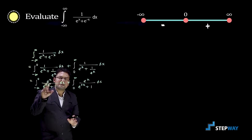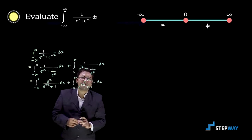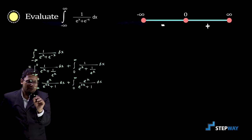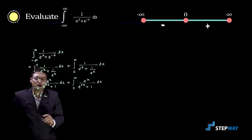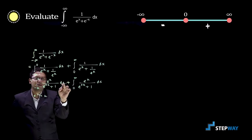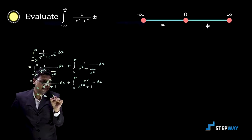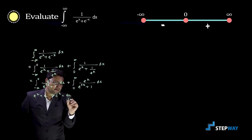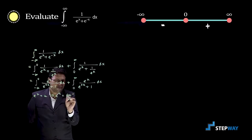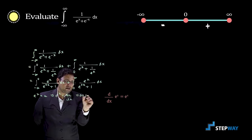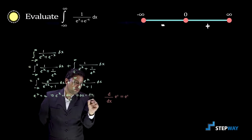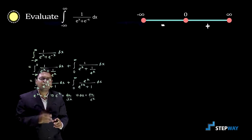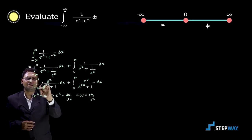To integrate these terms, we substitute e raised to x equal to a new variable u. Consider e raised to x equal to u and differentiate both sides with respect to x. We get e raised to x equal to du upon dx, so dx equals du upon e raised to x. Since we substitute e raised to x equal to u, the limits of x will be changed accordingly.